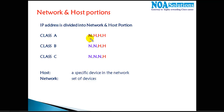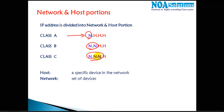The network portion and the host portions vary across different classes. In Class A, there is only one network portion. In Class B, there are two network portions. In Class C, there are three network portions that identify a network. Let's understand how exactly we use them in identifying the network and the host.